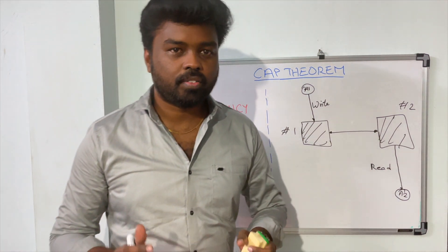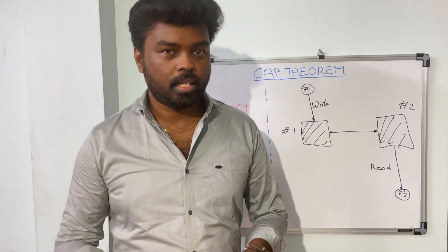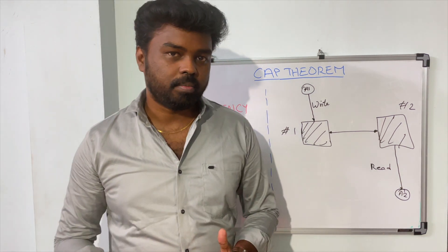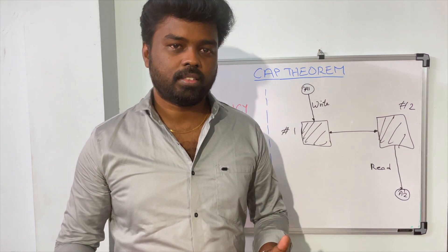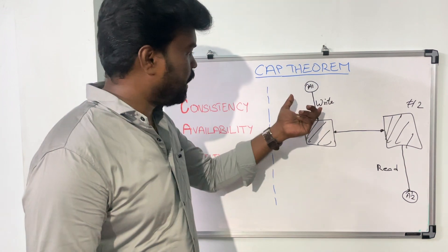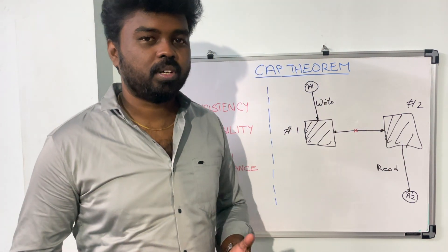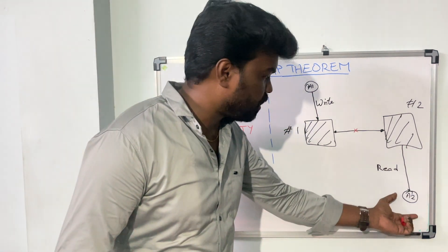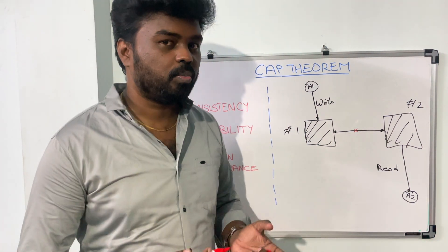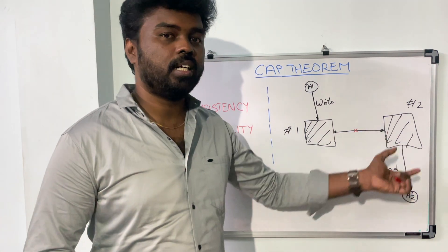The third attribute is partition tolerance, and this is one of the most important attributes in any distributed system. In a distributed computing network, the network is one of the unreliable factors. There is a lot of possibility that the network can go wrong, so your system should have the capability to handle such network failures. That's what we call partition tolerance. Consider an instance of the application writing data to node number one, and then a network partition happens — some network issue occurs, so replication cannot happen between node number one and node number two. Now if another instance of the application tries to read data from node number two, since there is no replication happening, the application instance might get inconsistent data — it might not be able to get the latest data from node number two.